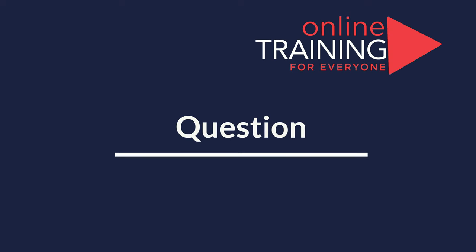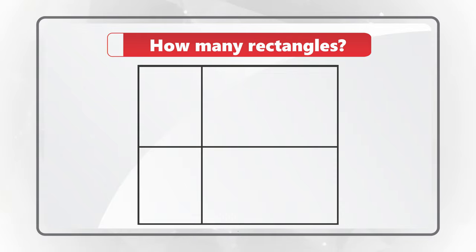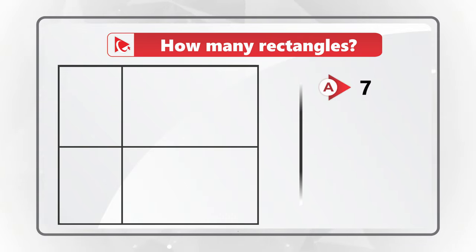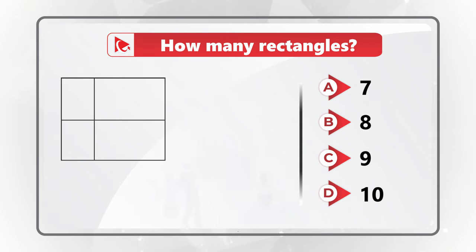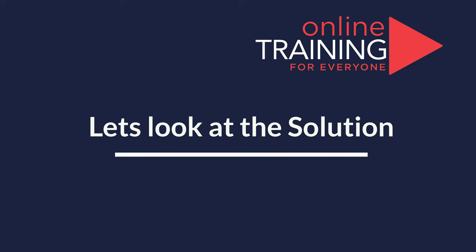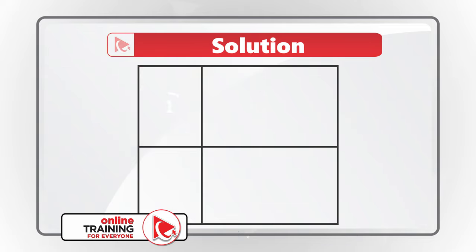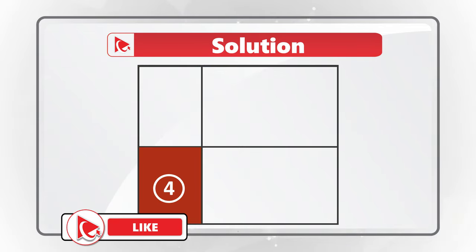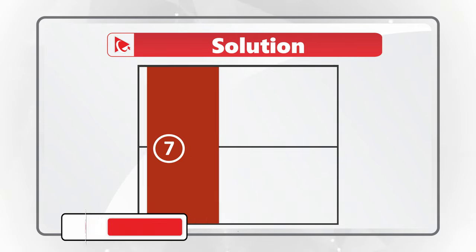I love this question because it seems very simple but the answer is extremely surprising. You need to determine how many rectangles are present in the shape. Choices are: A is 7, B is 8, C is 9, and D is 10 rectangles. Hard to believe, but I counted nine rectangles. Let me show them: one, two, three, four, five, six, seven, eight, and nine. If you see a different answer, please post in the comments.